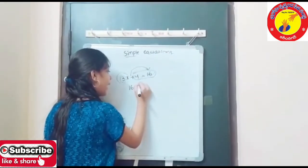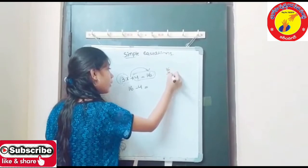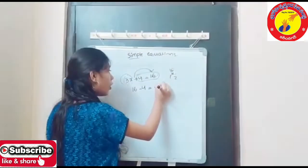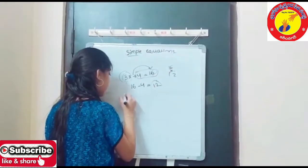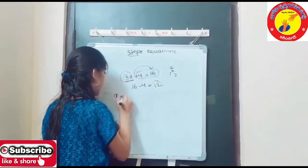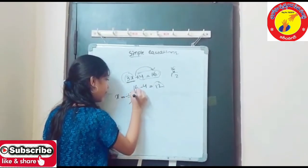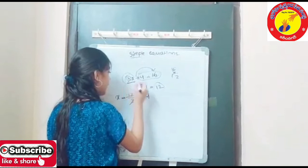First we should subtract these two, because the plus transverse means we got minus. 16 minus 4 is equals to 12. Here we got 12. The variable is 3X, let's write the X beside. 12 divided by 3 equals 4.